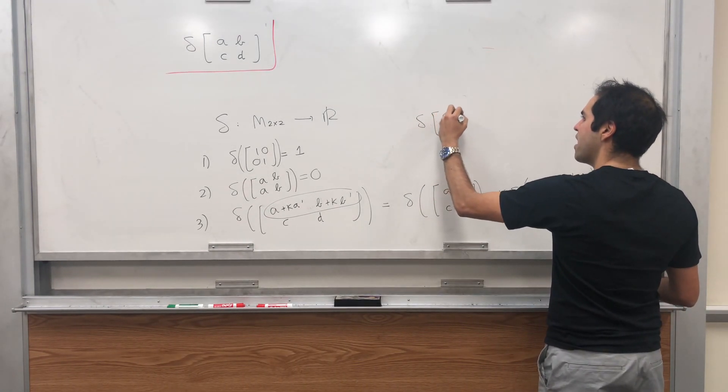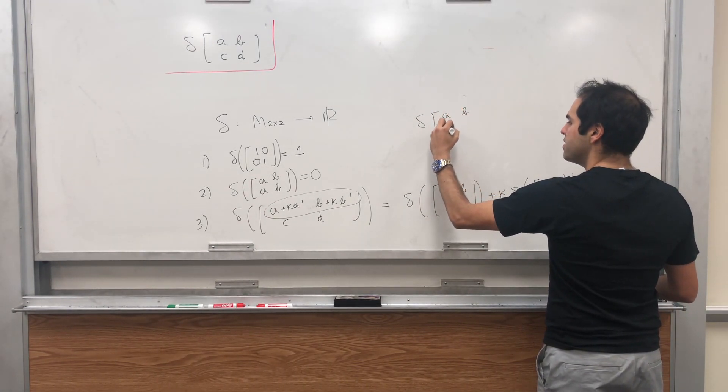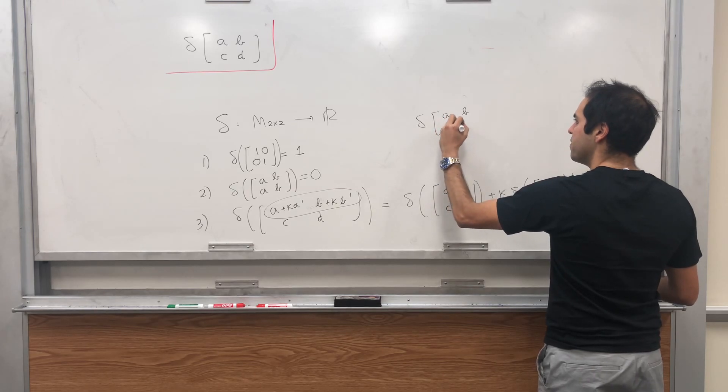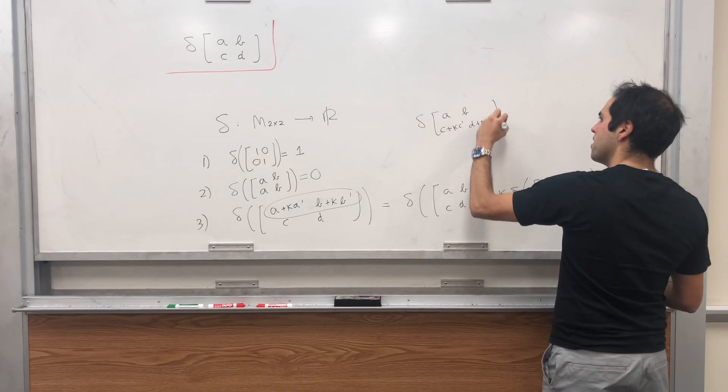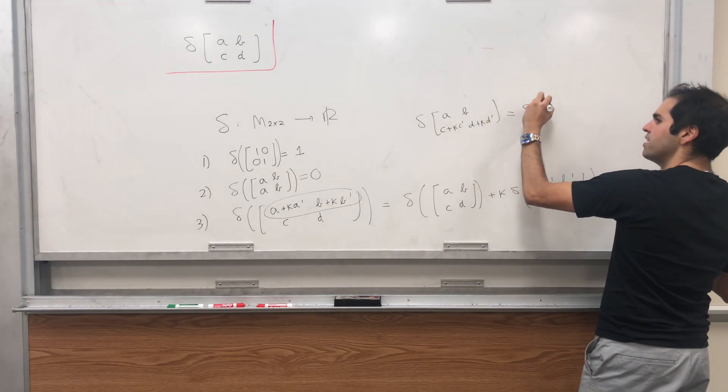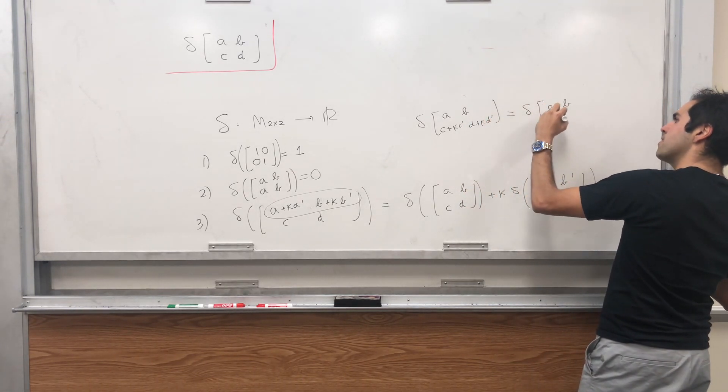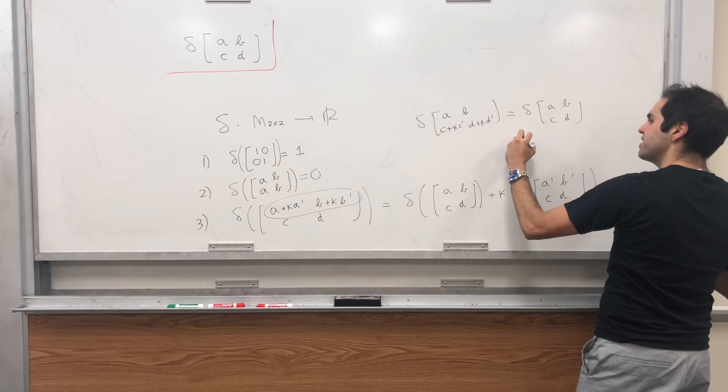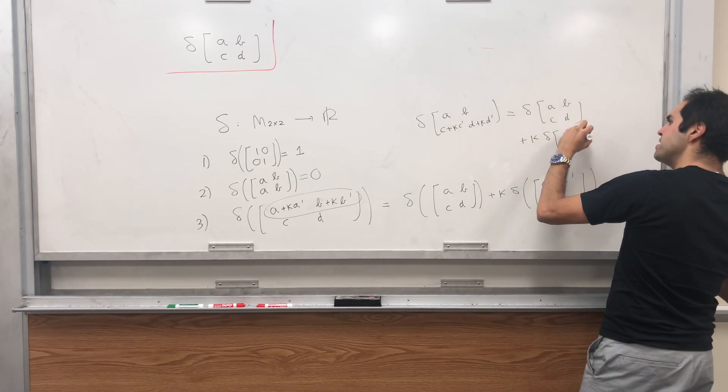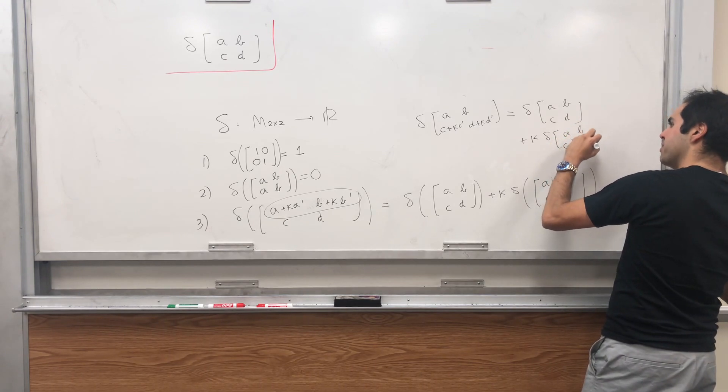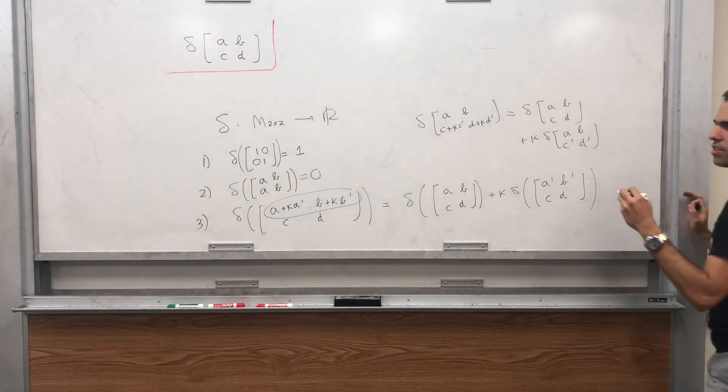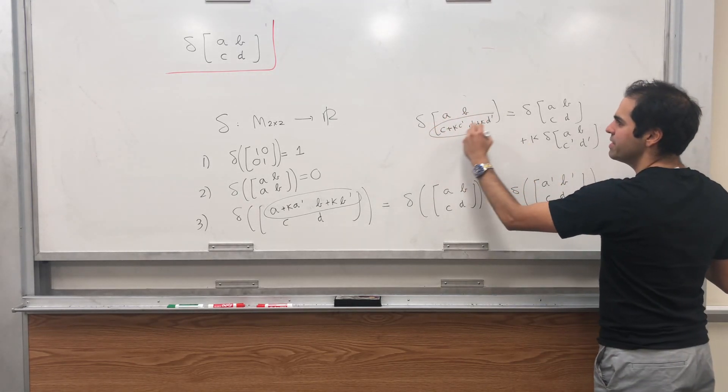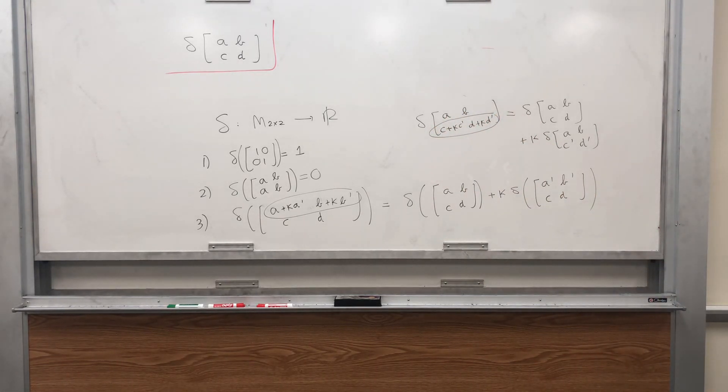And it's also linear in the second row. So delta of A, B, C plus kC prime, D plus kD prime is equal to delta of ABCD plus k times delta A, B, C prime, D prime. Suppose it's what's called multilinear, which means linear in each row separately.